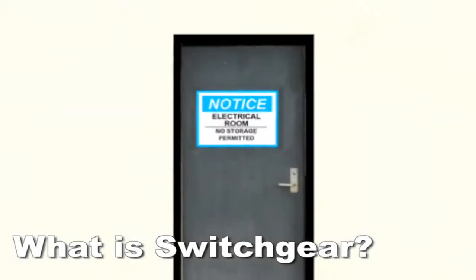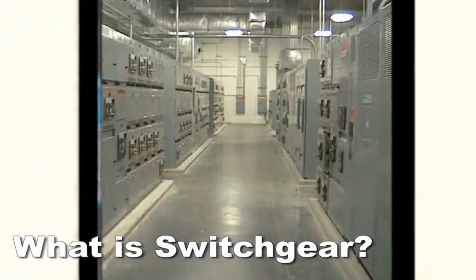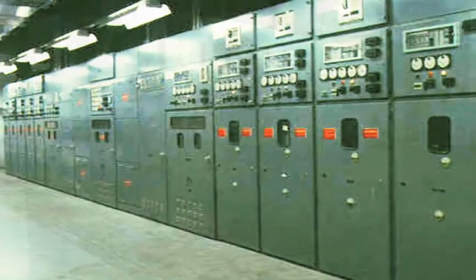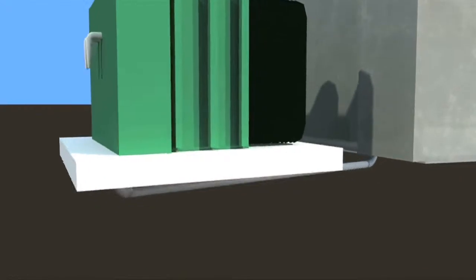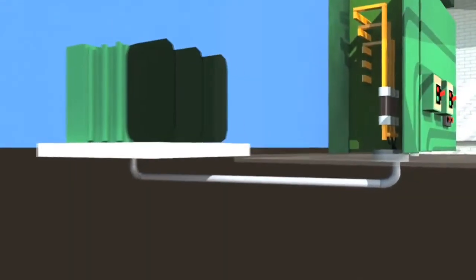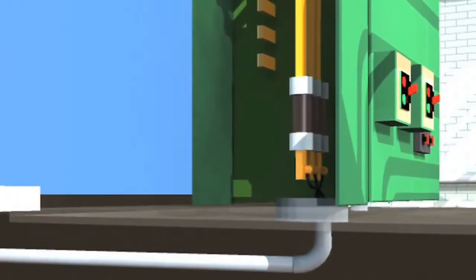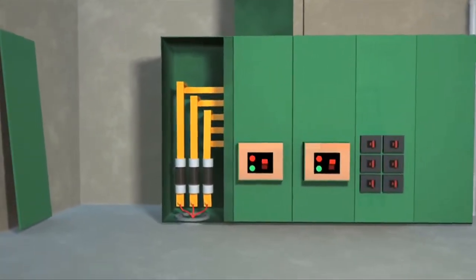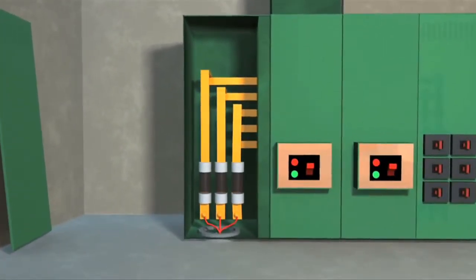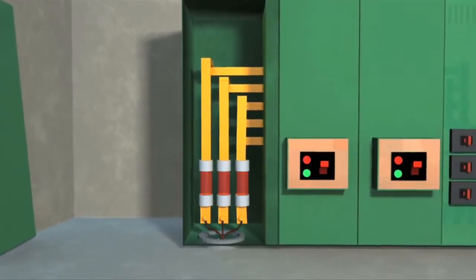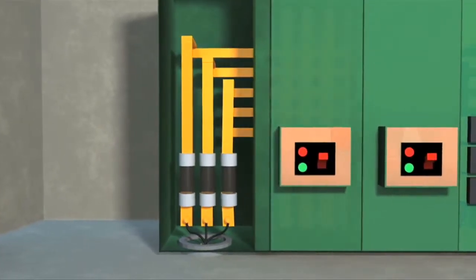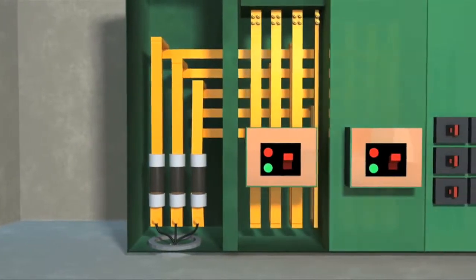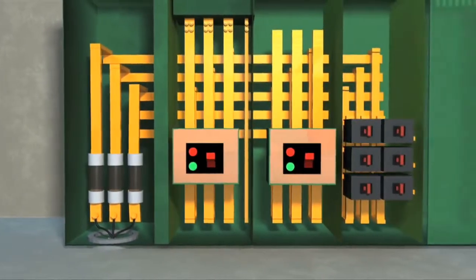What is switchgear? It's the beginning of the electrical distribution system inside the facility located in an electrical room. It is made up of several sections containing switches and or breakers. The first section receives the incoming power from the oil transformer. The wires are connected to a main breaker or in this example, they are attached to fuses. The fuses are connected to bus bar. Bus bar is either made up of copper or aluminum. The voltage travels through the bus bar to each section of connected switchgear, energizing each section.